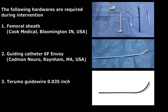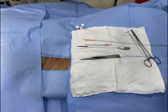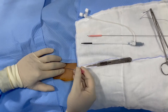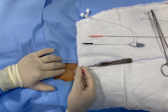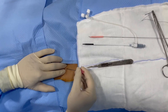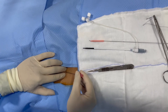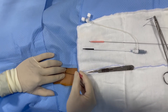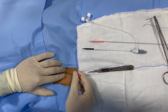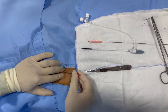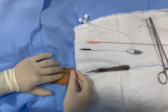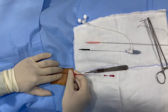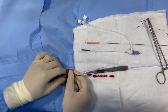The following hardware is required during the intervention: femoral sheath, guiding catheter, 6 French Terumo guidewire. After palpation of the right femoral artery at the mid-inguinal point, we puncture the right femoral artery with a puncture needle approximately two finger-breadths below the mid-inguinal point at an angle of approximately 45 degrees, where the arterial pulsations are felt.